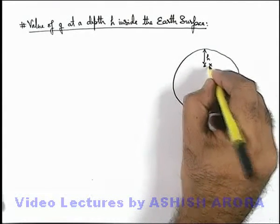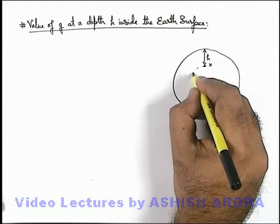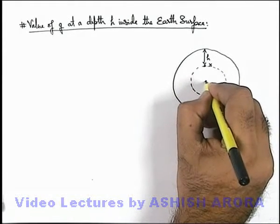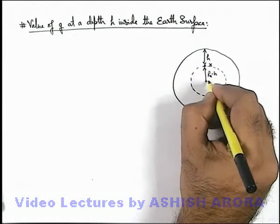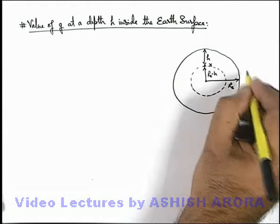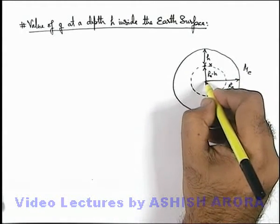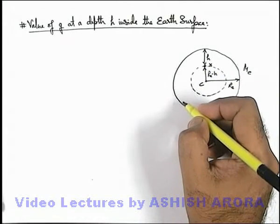And say at this point x we are willing to find the value of gravity. So we consider an inner solid sphere which is of radius Re minus h. As Re is the radius of earth, Me is its mass, then at a distance Re minus h from the centre of earth we are required to find the value of g.